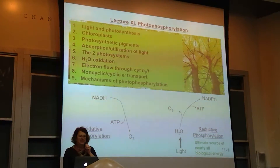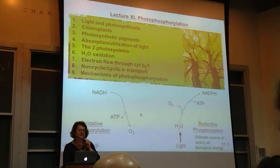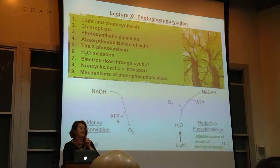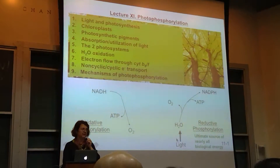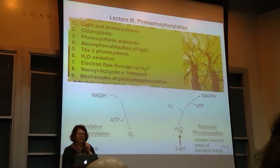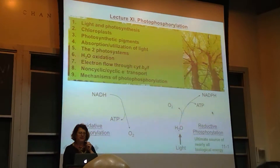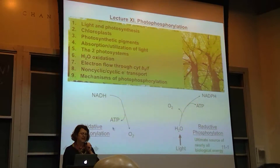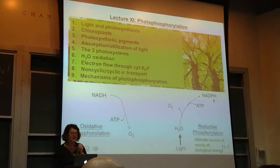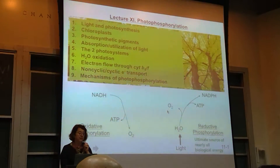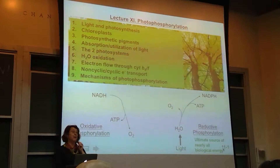We spent a lot of time talking about mitochondrial oxidative phosphorylation, where NADH basically released oxygen and ATP was formed. Here we're going from something that has a very low reduction potential — water. We need energy to actually drive the electron transport chain to make NADH and ATP. So whereas oxidative phosphorylation goes from NADH to NAD+, this is reductive — we're going from NAD+ to NADH. This is the ultimate source of nearly all biological energy.